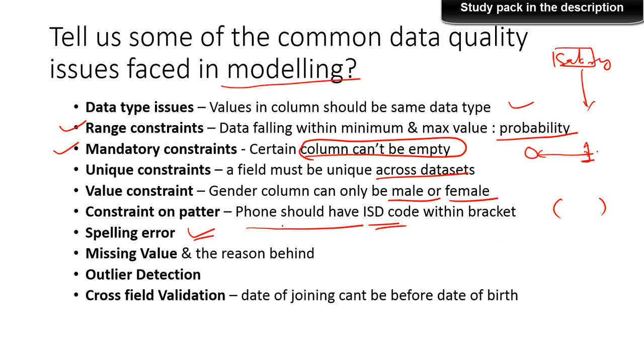Spelling error. Sometimes your data could have a spelling error. That could cause issues. Missing values and the reason behind it. This is a very important data quality issue to be checked and ensure that you find a reason behind why is the data missing in a particular column. Outlier detection. Outliers are big problem in modeling.